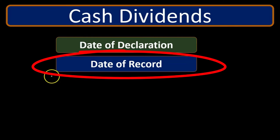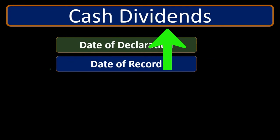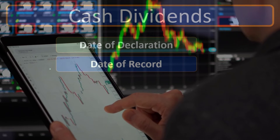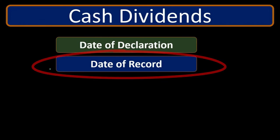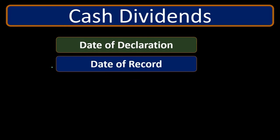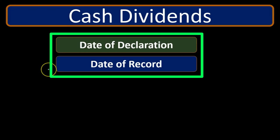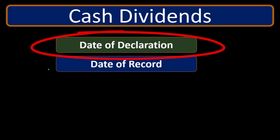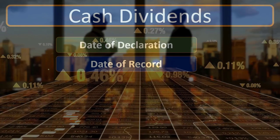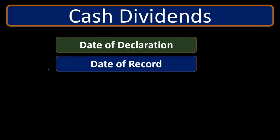The second date is the date of record — the one that does not have a journal entry. Because stockholders are free to buy and sell stock whenever they want, we need a specific date to determine who owns the stock and will receive the dividend. Whoever owns the stock as of the date of record receives the dividend. If someone sold their shares before that date, the new owner gets the dividend.